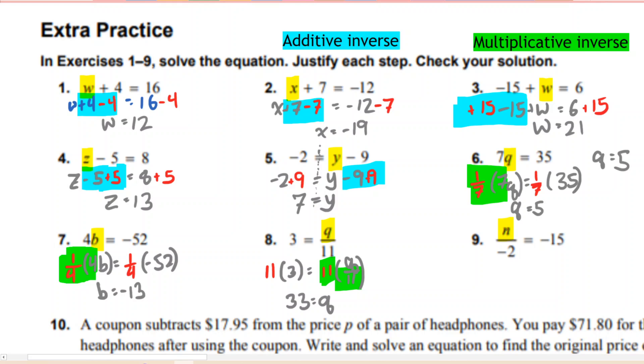n over negative 2. That's n divided by negative 2. So we're dividing by negative 2. The multiplicative inverse here of dividing by negative 2, the inverse is to multiply by negative 2. So we're going to multiply both sides by negative 2, just like we did before. And here is our multiplicative inverse, negative 2 and negative 2. So that gives me an n over here. Negative 2 times negative 15, that is positive 30. So look at that. We did 9 problems just now.